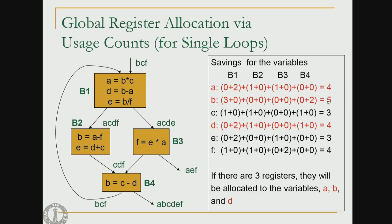With a savings of 5, b is undisputed and will be one of the variables given a register. Then there are three contenders — a, d, and f — and two of those can be given registers. We have arbitrarily picked a and d; it could have been a and f as well. Once we provide registers to these variables, we generate machine code referring to the registers for a, b, and d. Since b is live on entry to the loop, it must be loaded; and a, b, and f must be stored back to memory using store instructions at the loop exit.